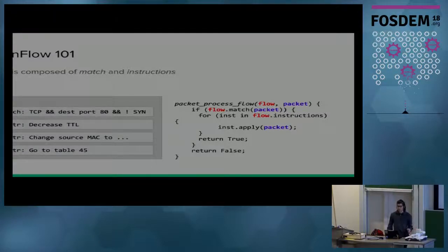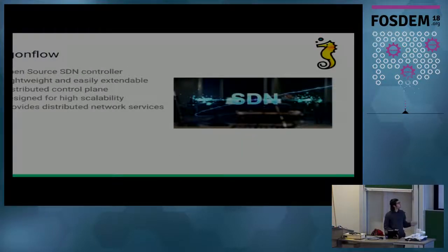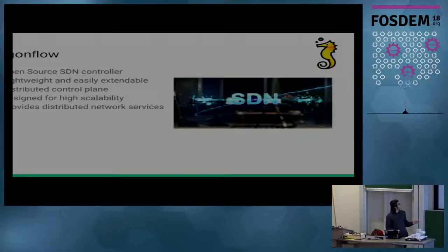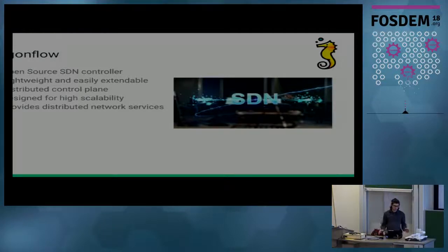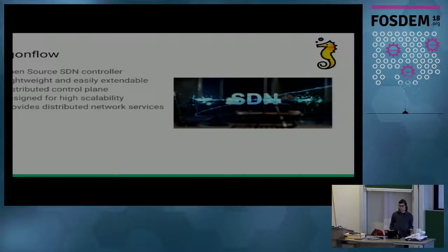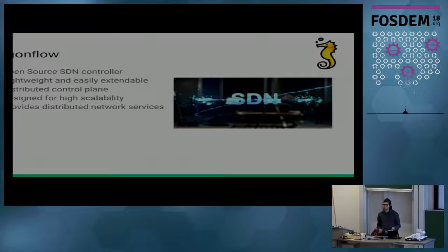That was a quick introduction to OpenFlow — we'll come back to it later. DragonFlow is an open source project implementing a software-defined networking controller for OpenStack and Kubernetes. It is built on a few major principles: we wanted to make it as lightweight and simple as possible, so a small deployment won't be burdened by it, but also quite scalable so that a huge deployment can still use DragonFlow without being limited by its architecture. Additionally, we try to make everything pluggable.